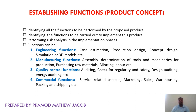Manufacturing functions include assembling the product, determination of tools and machinery used for production, purchasing raw materials, and allotting labor and machines for product development. Quality control functions involve checking for regularity and safety of the product, performing design auditing — where the auditing team ensures the design meets customer specifications — and energy auditing, ensuring energy is used efficiently. Commercial functions cover marketing, sales, how to store produced materials in the warehouse, and how to pack and ship the product.